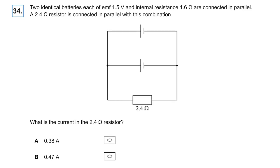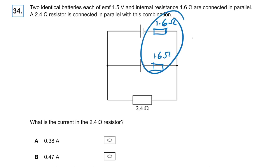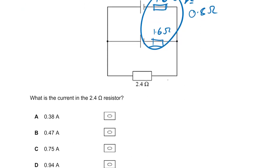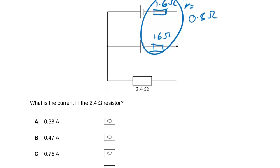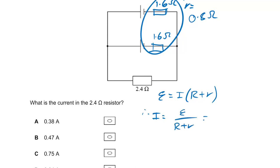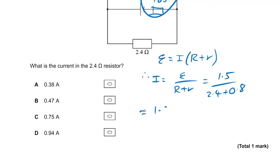Question thirty-four: two batteries in parallel, each with internal resistance 1.6 ohms. The combined internal resistance is 0.8 ohms. Using EMF equals I times (R plus r): 1.5 divided by (2.4 plus 0.8) equals 1.5 divided by 3.2, which is just under 0.5 amps. The answer is B, specifically 0.47 amps.